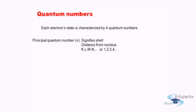The first quantum number, and the most important one, is known as the principal quantum number, represented by a small n. It signifies the shell number — that is, which shell the electron lies in. It shows us the distance of the electron from the nucleus.